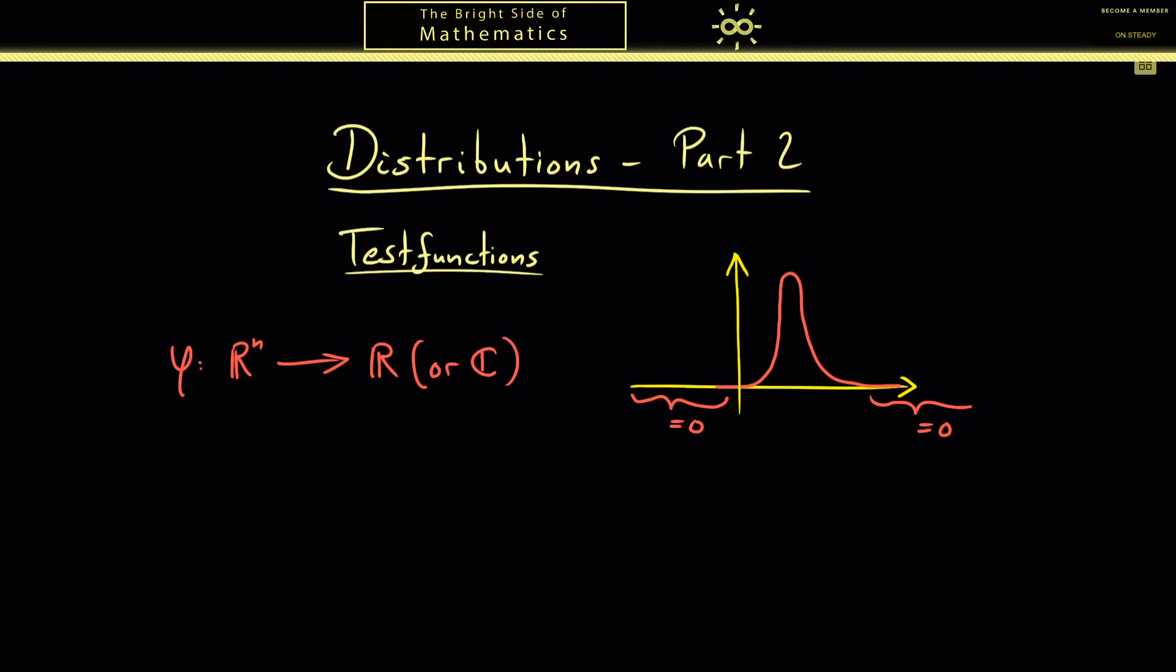Now we can start with the definition, which is the space of test functions. Indeed, for this one we have a standard notation, one uses a curly D. And if you want to emphasize the domain of definition, we put that after the D. Okay, let's write down the definition step by step. We know we want at least continuous functions defined on R^n.